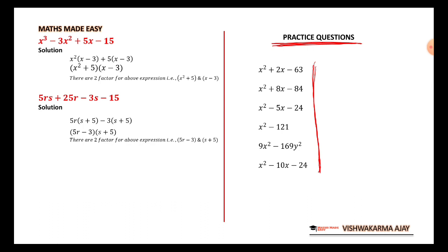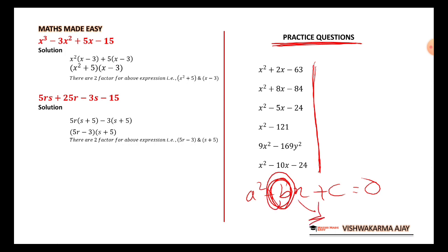For example, if there is an equation ax² + bx + c = 0, you need to work on the b term to get the third term, and when you have that third term, this becomes a perfect square. We are going to look at this in our next lecture. Till then, I encourage you to go ahead, solve these questions, and comment your answers in the comment section. Thank you very much.